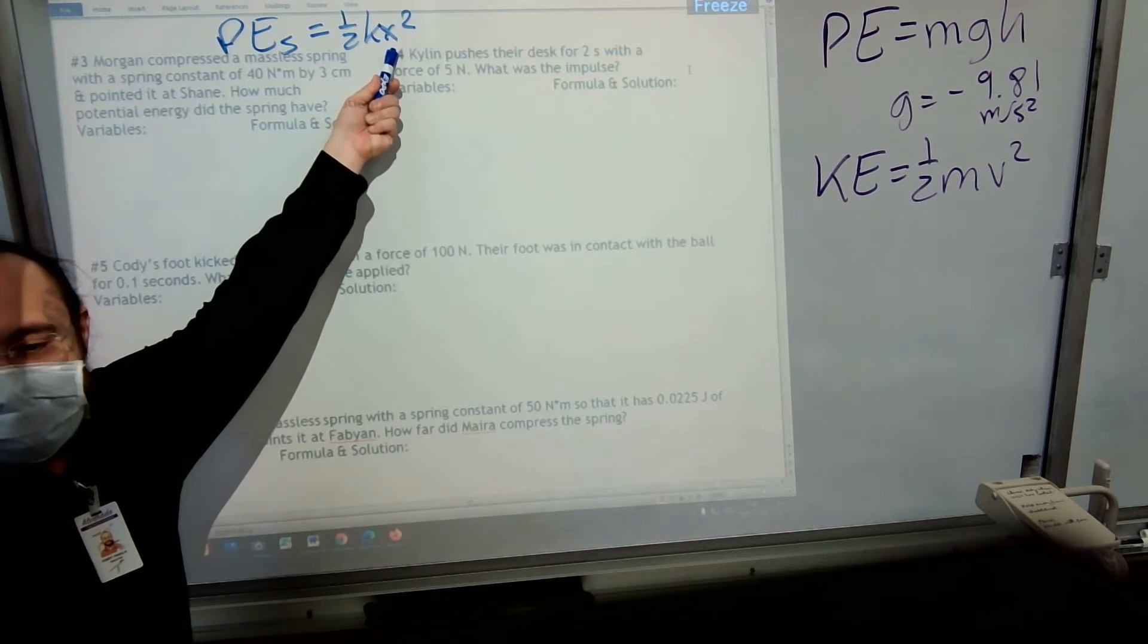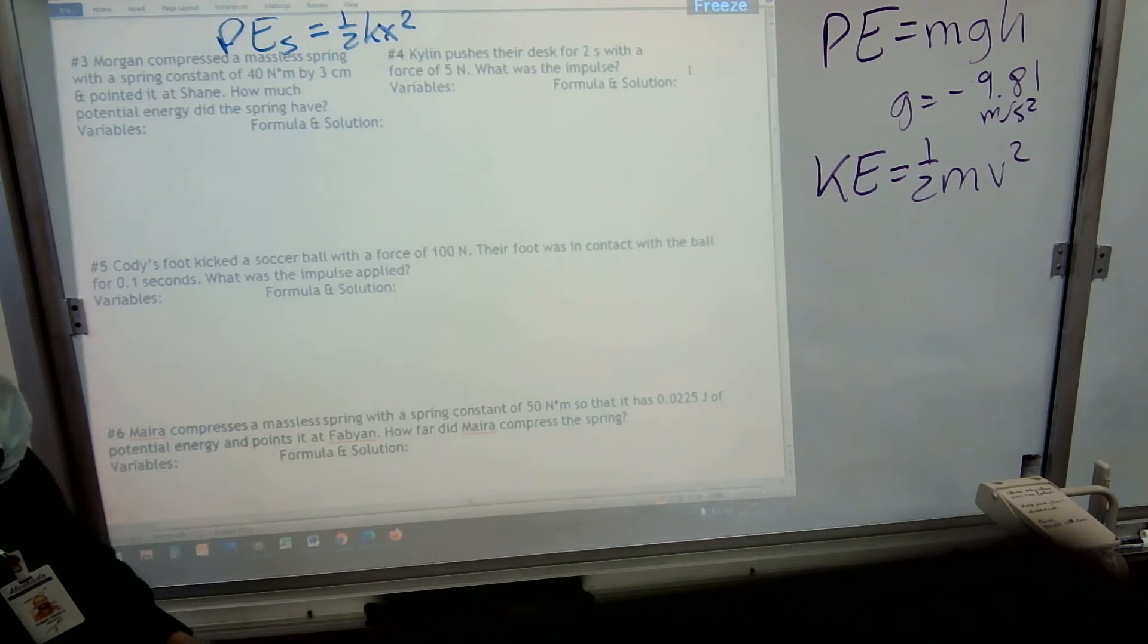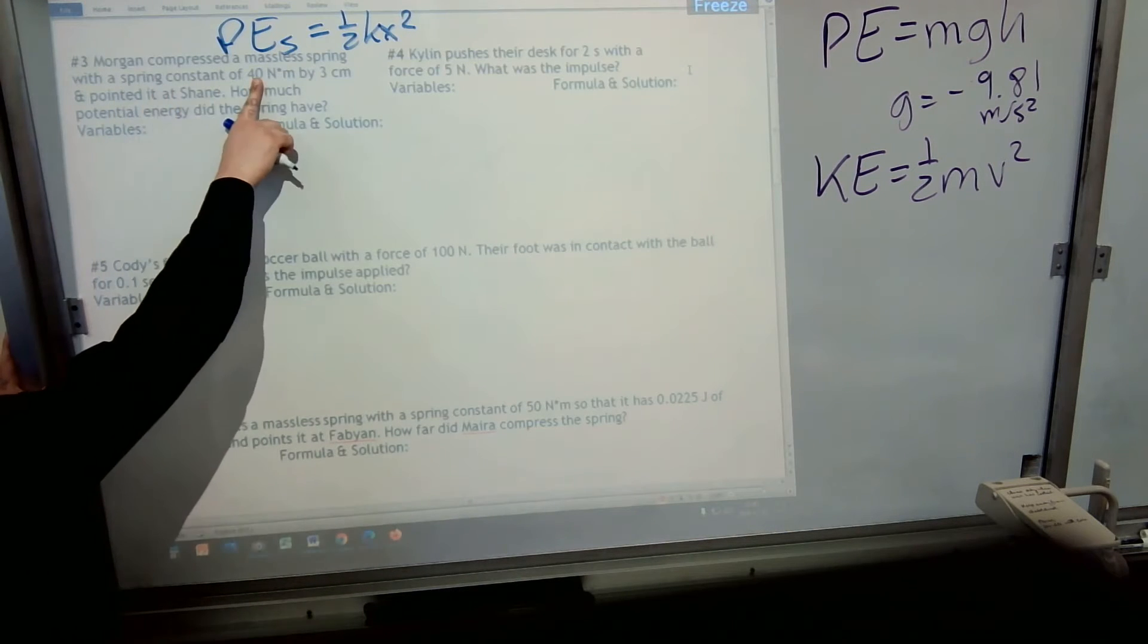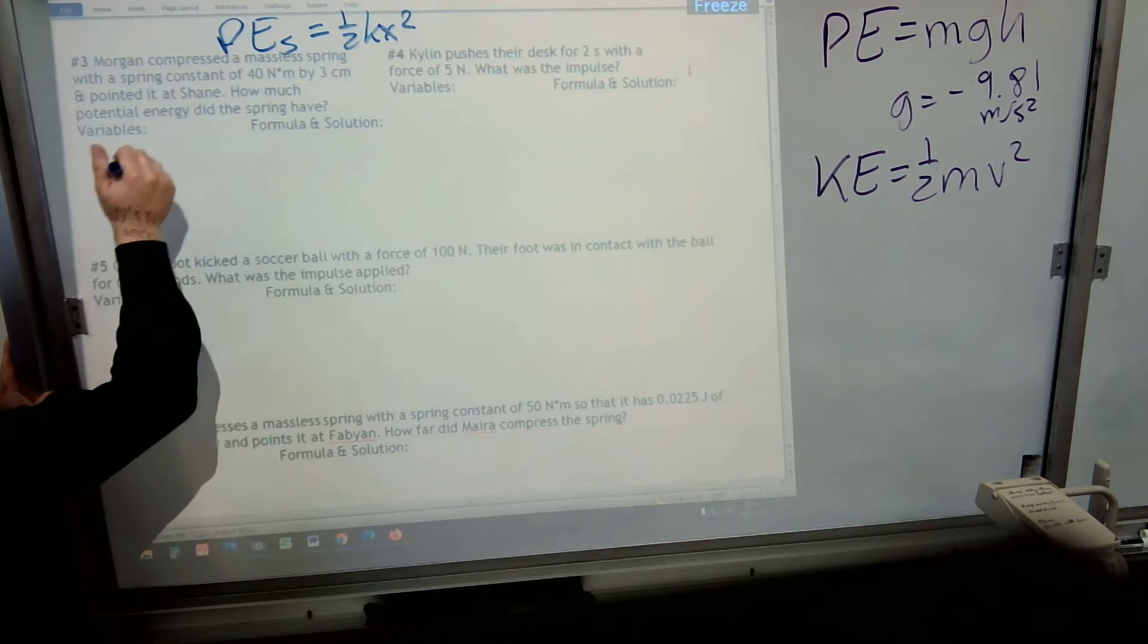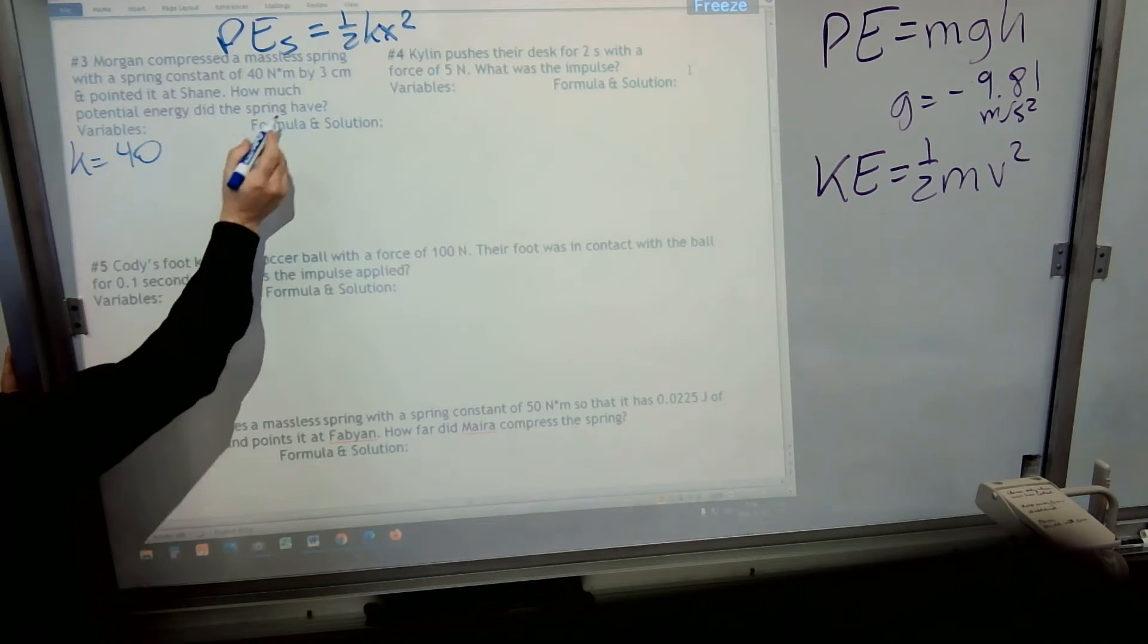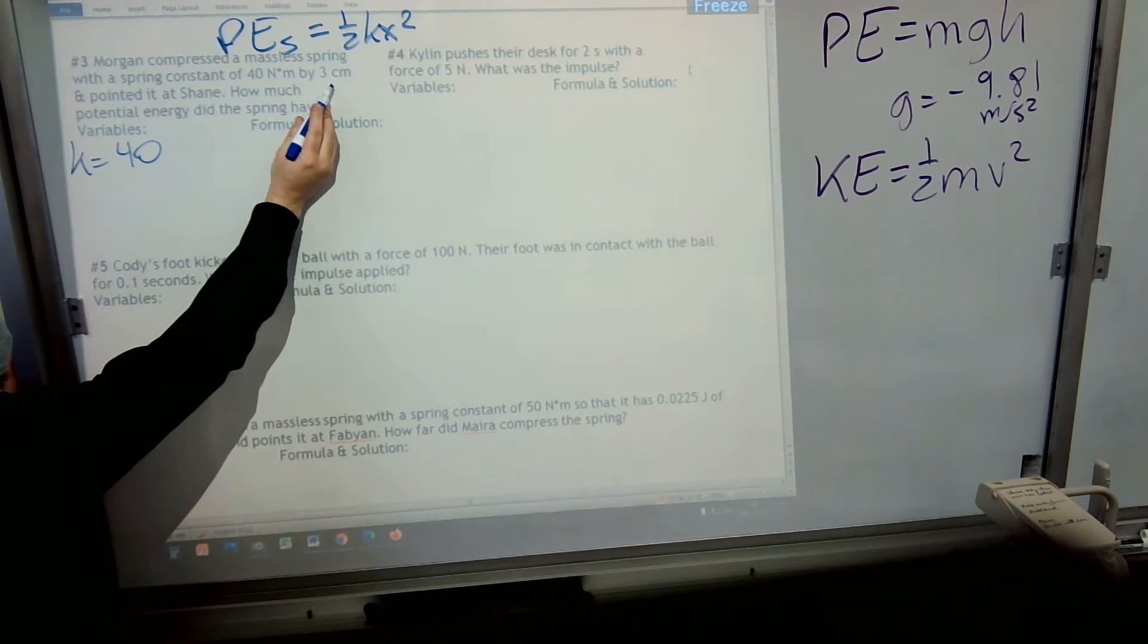X is how far you compress the spring in meters. So, I'll do an example here with that potential energy of a spring. In this spring, it has a spring constant of 40. So that's k equals 40. It says 3 centimeters.